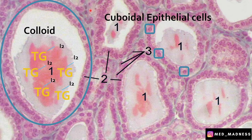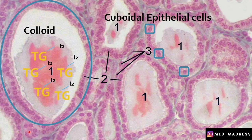A final point about the parafollicular space: this parafollicular region contains cells called C-cells, which secrete calcitonin that plays a very important role in calcium homeostasis.